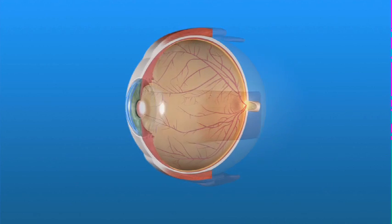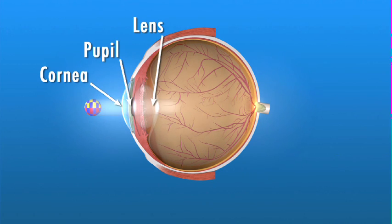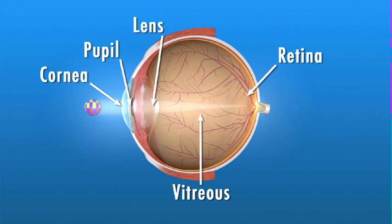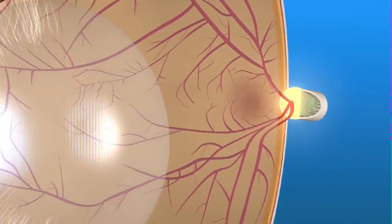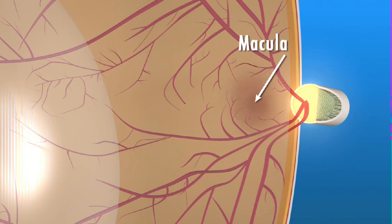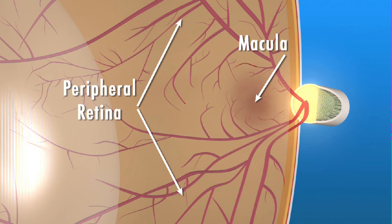To understand diabetic retinopathy and how it affects your vision, let's take a look at how the eye works. Light rays enter the eye through the cornea, pupil, and lens. These light rays pass through the vitreous, a clear gel-like substance that fills the middle of the eye. The light rays are focused on the retina, a light-sensitive tissue lining the back of the eye. The macula is a very small area at the center of the retina that gives us our fine pinpoint central vision. The area of retina surrounding the macula gives us our peripheral or side vision. The retina converts the light rays into signals that are sent through the optic nerve to the brain.